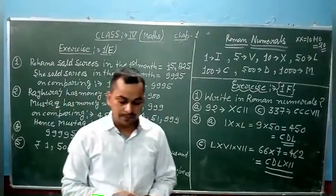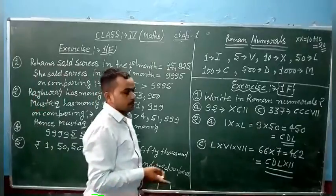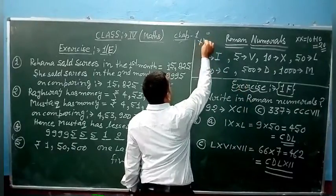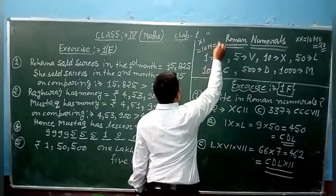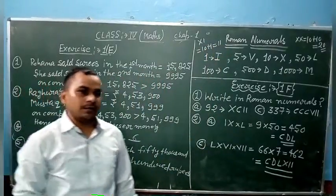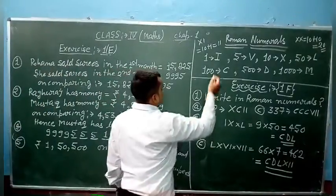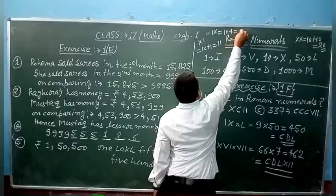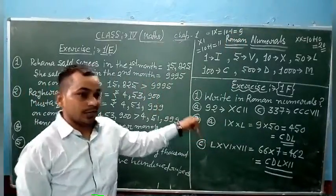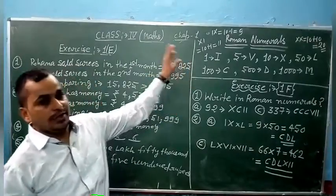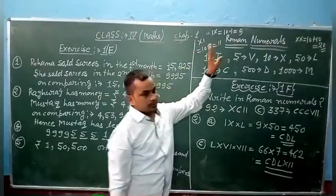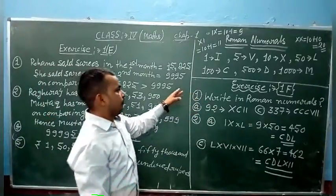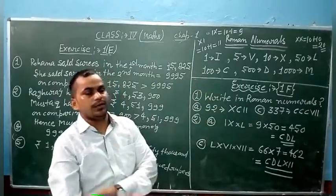I, X, C are repeated only three times. V and L never repeated. If a smaller number is written after a larger number, it means the value is added. Smaller number written after larger number means X, I equals 10 plus 1 equals 11. And if a smaller number comes before a larger number, that means subtraction. For example, I, X equals 10 minus 1 equals 9.